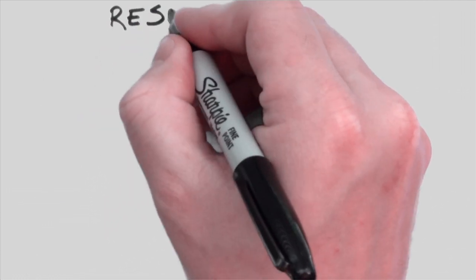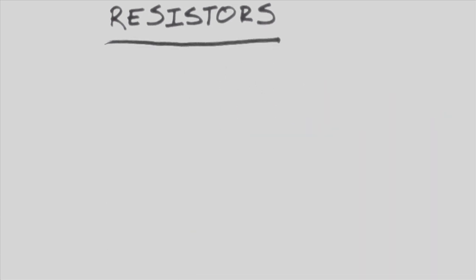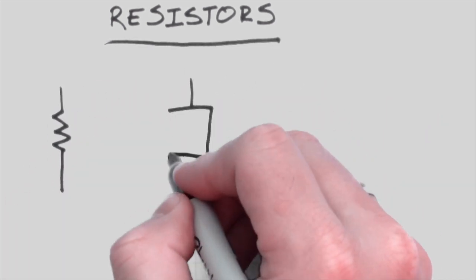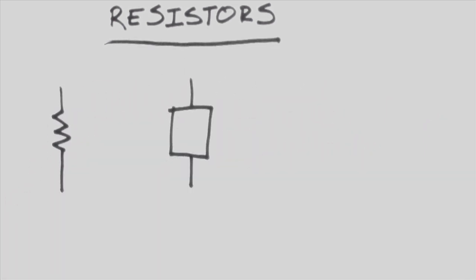The first component we're going to actually look at are resistors. There are two different ways to draw a resistor. The first is with squiggly lines, and the other is as a box. Depending on what part of the world you're in, or what part of the world that the schematic came from, either of these symbols can be used for fixed resistors.